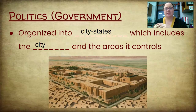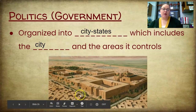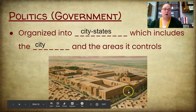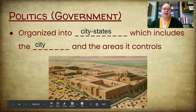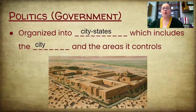The city-state was organized this way. If you look at this picture, we have the city-state, which is the main part surrounded by a wall. Then you have villages and houses on the outside, and those would have all been part of the city-state.